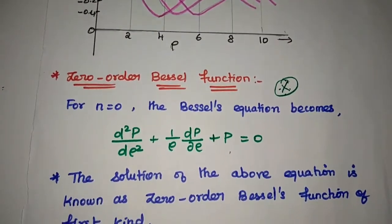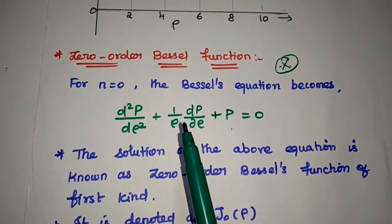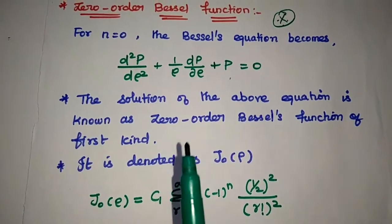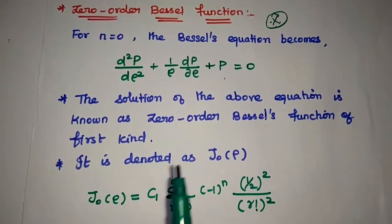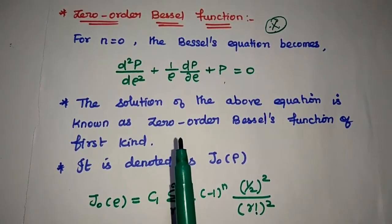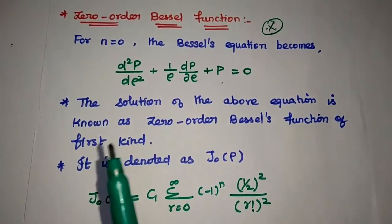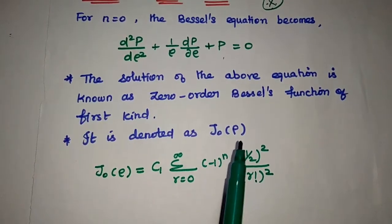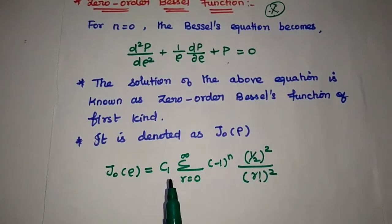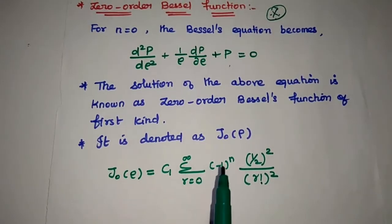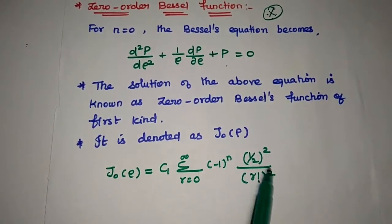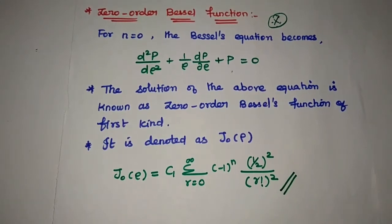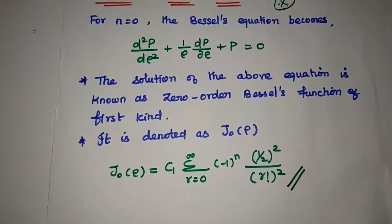Whenever N is equal to 0, the Bessel equation becomes d²P/dρ² + (1/ρ)(dP/dρ) + P = 0. The solution of this equation is known as the zero-order Bessel function of the first kind. Any second order differential equation has two independent linear solutions. The first kind solution is denoted as J₀(ρ), given as J₀(ρ) = C₁ Σ (from R=0 to ∞) [(-1)^R × (ρ/2)^(2R)] / (R!)². This zero-order Bessel function of the first kind is widely used in analyzing circular waveguides.